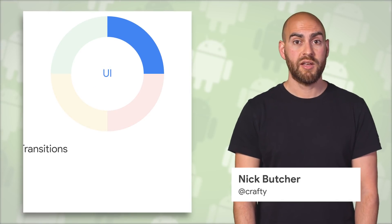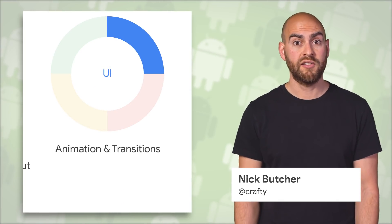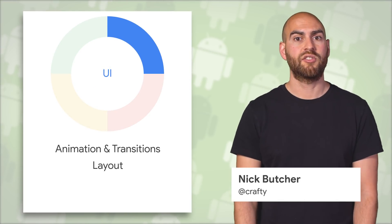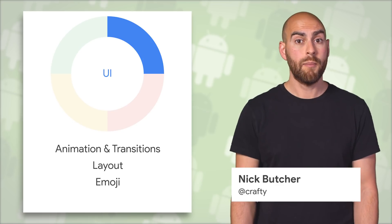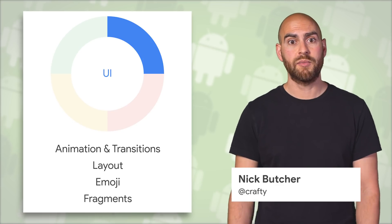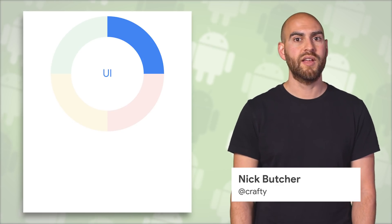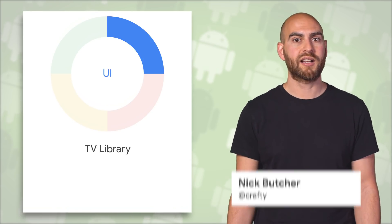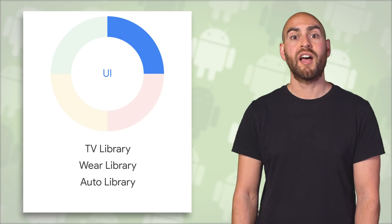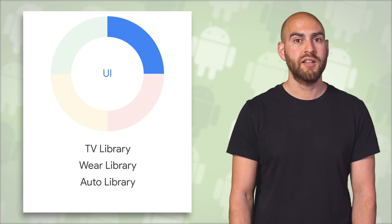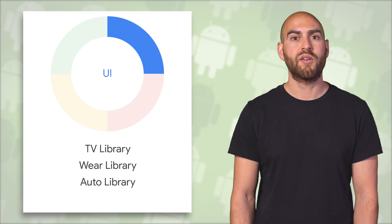UI components like animation, transitions, layouts such as ConstraintLayout, text, emoji, and fragments, along with the TV Leanback library, the Wear UI library, and the Auto library, are now part of Jetpack.